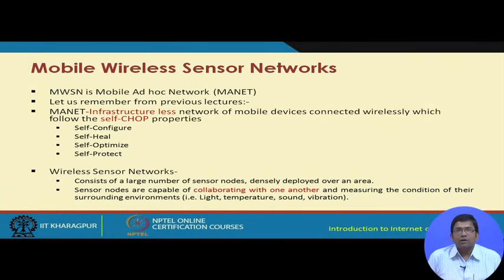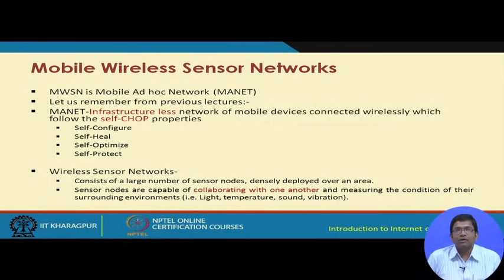A mobile wireless sensor network is conceptually a stationary sensor network integrated with a mobile ad hoc network (MANET) — not physically but conceptually. We take the features of MANETs and the features of stationary sensor networks and combine them. MANETs are infrastructure-less, resulting in dynamically changing topologies, which invite properties like self-configuring, self-healing, self-optimizing, and self-protecting, since there is no centralized entity controlling network management.